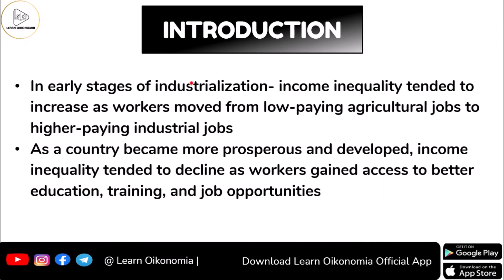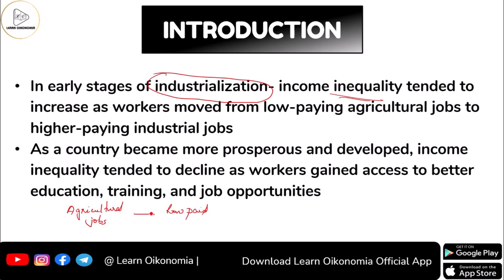Kuznets says that in the initial stages of development, the nation would be in the initial stage of industrialization. As industrialization begins, there is an increase in income inequality because workers will be moving from agriculture jobs — which are low-paid — to industrial jobs, moving from the traditional agriculture sector to the modern industrial sector.